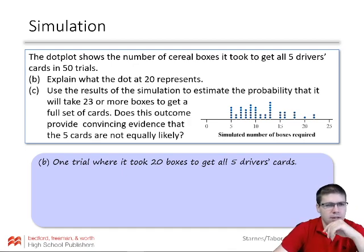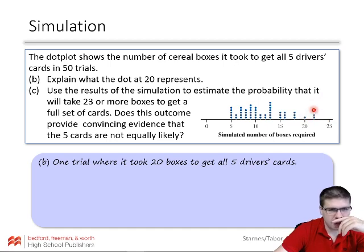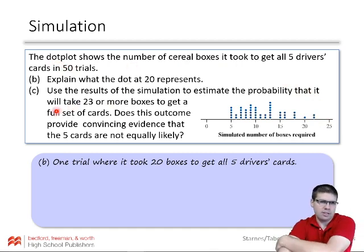And then use the results of the simulation to estimate the probability that it will take 23 or more boxes to get a full set of cards. Does this outcome provide convincing evidence that the five cards are not equally likely? So 23 trials, we did not even see happen. We had, looks like 22, but it never took 23. So that was zero out of our 50 trials. Did it take that long? So that's pretty unlikely.